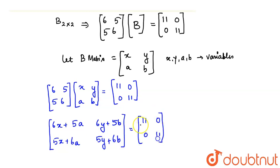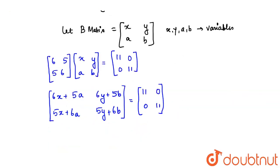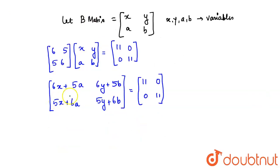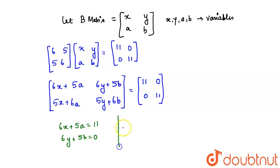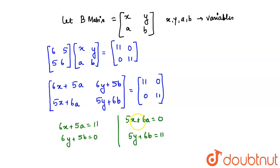Equating corresponding elements, we get four equations: 6x + 5a = 11, 6y + 5b = 0, 5x + 6a = 0, and 5y + 6b = 11.